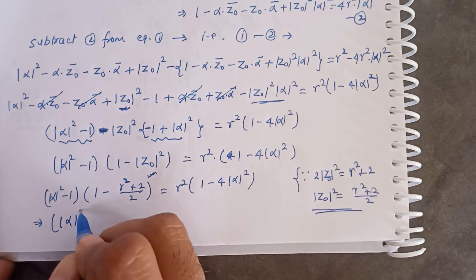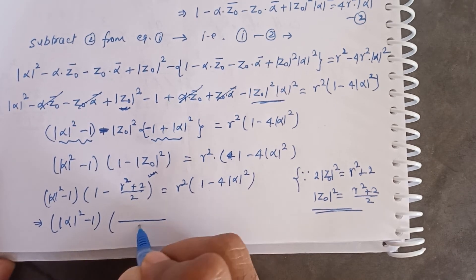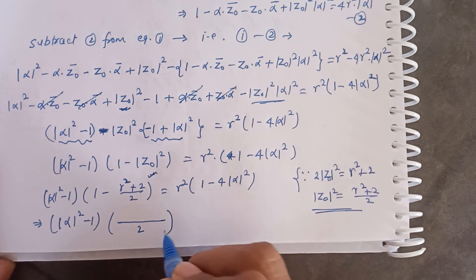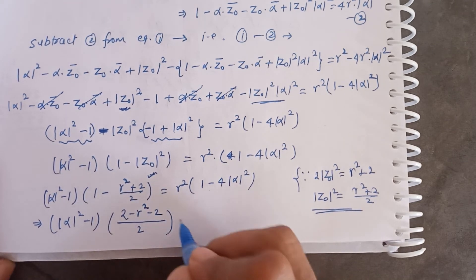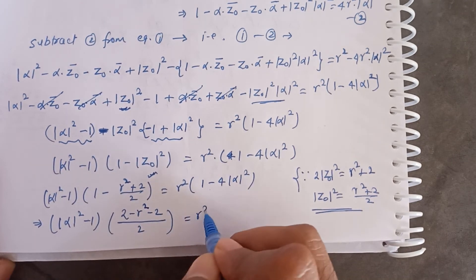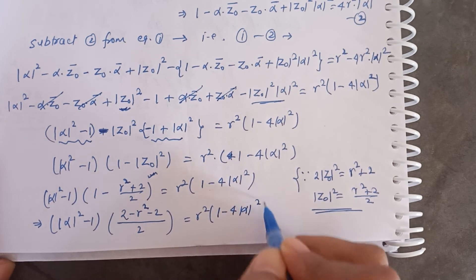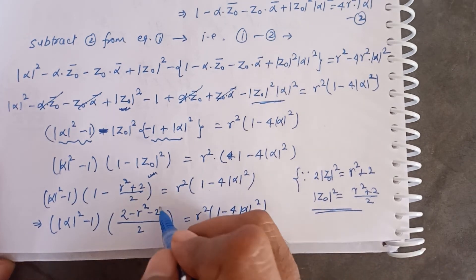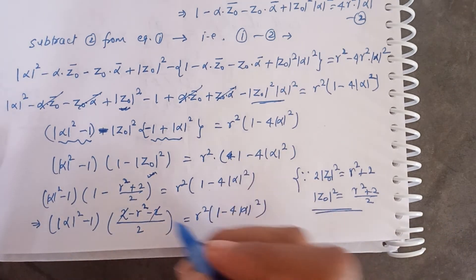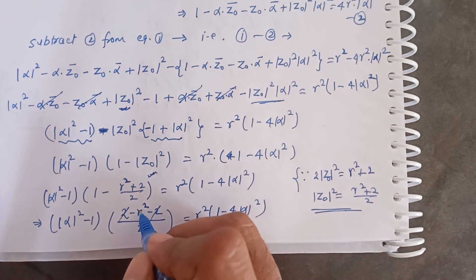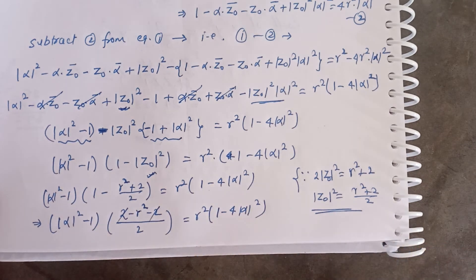Further simplifying, we write (|α|² − 1) times the bracket. Applying the terms, we get (|α|² − 1) multiplied by a factor equal to −r²/2, which equals r²(1 − 4|α|²). After applying r² terms and dividing, the expression becomes (|α|² − 1)(−r²/2) = r²(1 − 4|α|²). The r² terms will cancel in the next step.